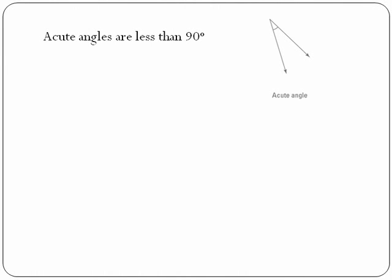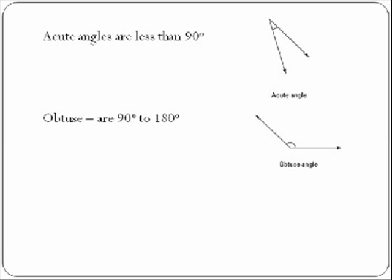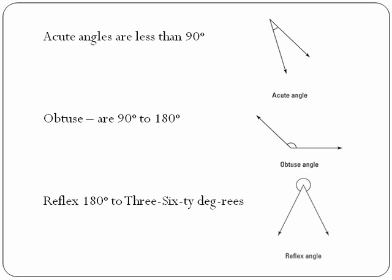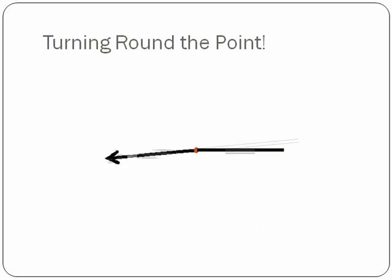Acute angles are less than 90 degrees. Obtuse angles are 90 to 180 degrees. Reflex angles are 180 to 360 degrees. Turning round the point.